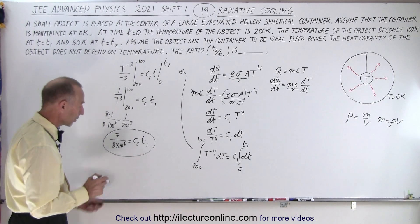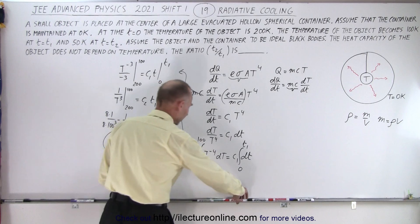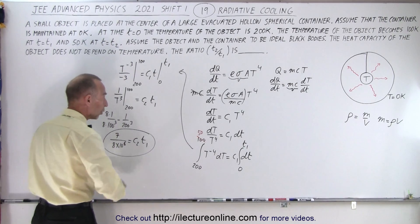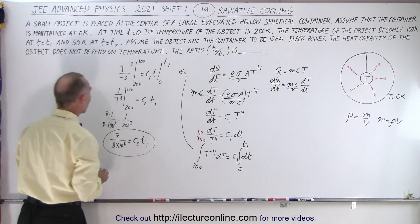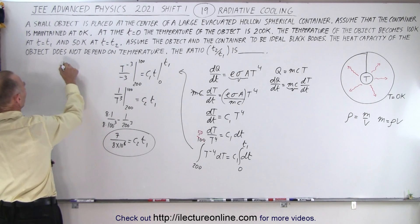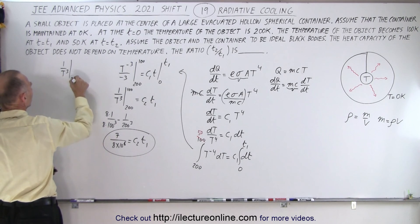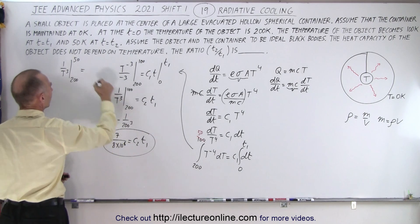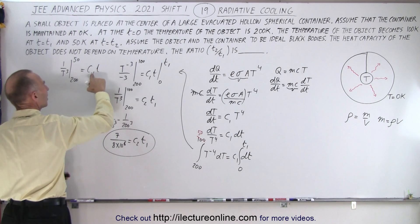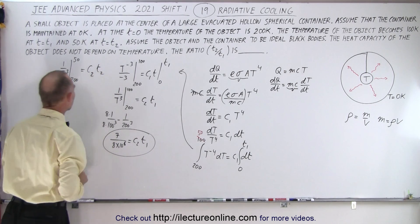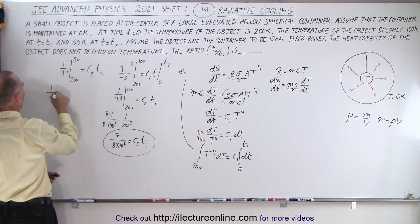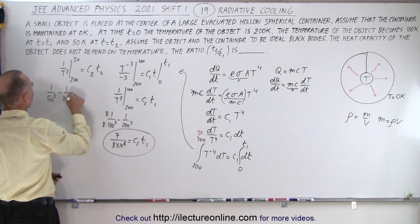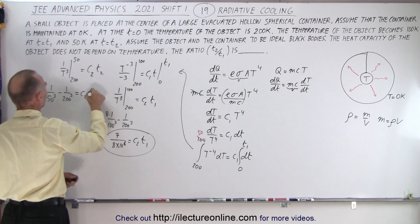Now we repeat with different limits—from 200K to 50K for time t₂. The integral becomes (1/T³) evaluated from 200 to 50, which equals c₂t₂. This gives 1/50³ - 1/200³ = c₂t₂.